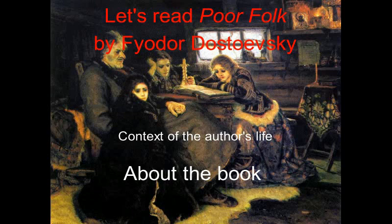The life of Dostoevsky was an exceptionally turbulent one, but it had a clear turning point in 1849, when he was arrested by the Tsarist government for his socialist political activism. Months later, he endured harrowing moments on the scaffold awaiting his execution, but was saved at the last minute by a reduced sentence — imprisonment in Siberia. When Dostoevsky returned from Siberia to St. Petersburg in 1859, he was a changed man, and his experiences during this crisis fueled the genius of his later works, including Crime and Punishment and The Brothers Karamazov.